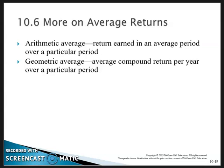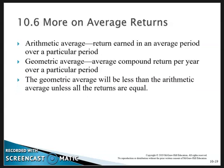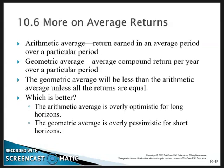The geometric average will be less than the arithmetic average unless returns are equal. Which is better? The arithmetic average is overly optimistic for long horizons; geometric averages are overly pessimistic for short horizons.